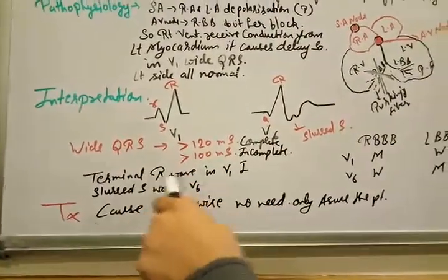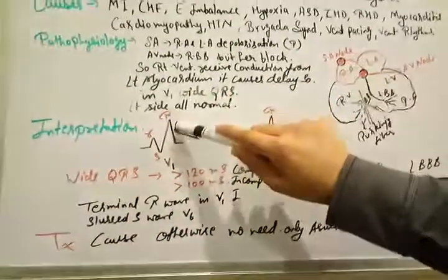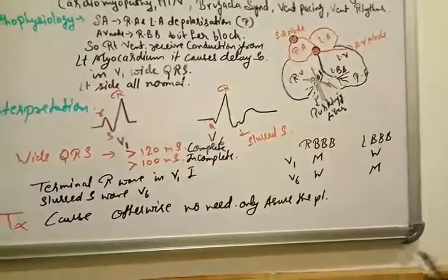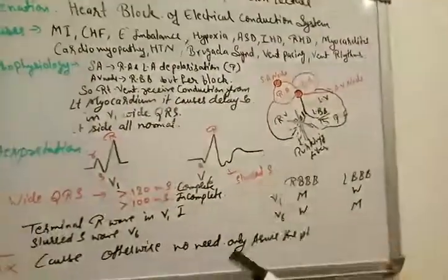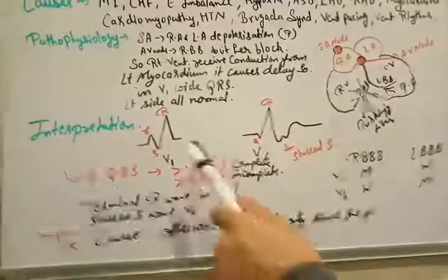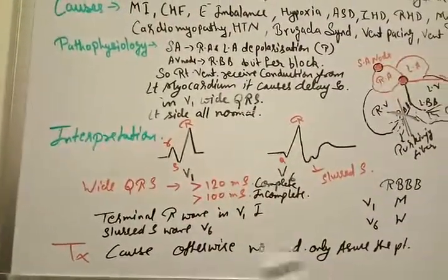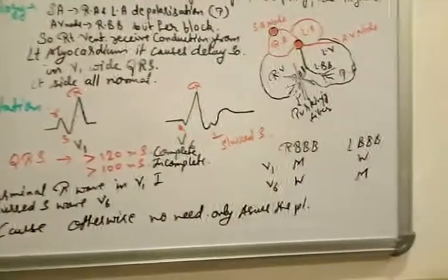In V1 there is a terminal capital R wave. Slurred S wave in V6. So remember this formula. V5 also we can see slurred S wave and V6 also. And we can see M pattern in V1 and V2 also. But in case of left bundle branch block there is vice versa.